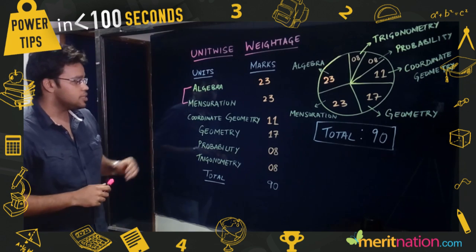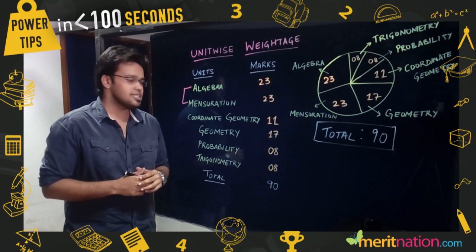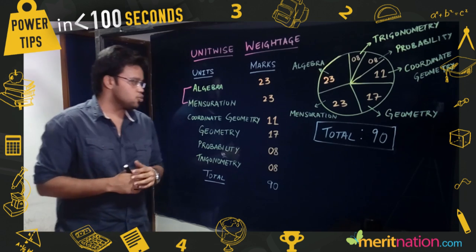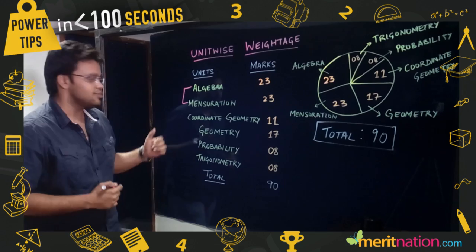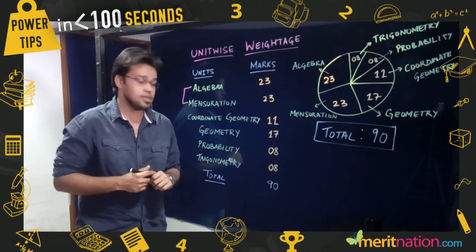Moving on, coordinate geometry is one of the easiest and most scoring topics as it involves just three simple formulas. So once you start your revision, go for coordinate geometry to gain some daily momentum.